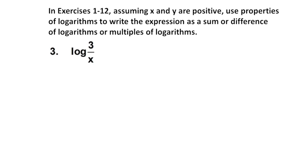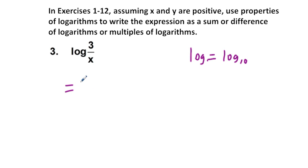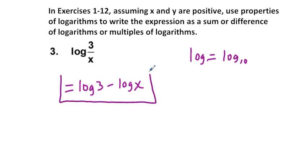Next, problem 3. This time we have log — not the natural logarithm, but log base 10. Keep in mind that when we write LOG, we mean log base 10. We have the quotient of 3 and x, so we can rewrite the logarithm of 3 over x as log(3) minus log(x). That's all there is to it; we cannot simplify any further. We box this in as our correct answer.